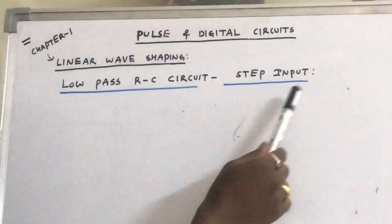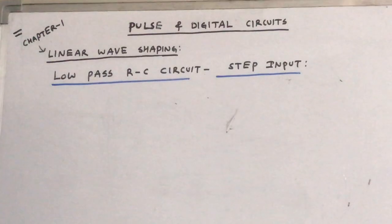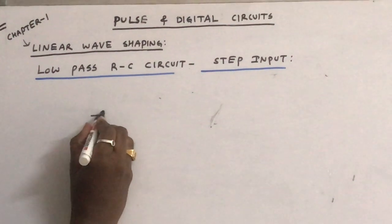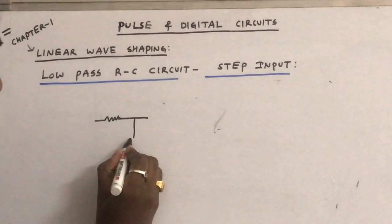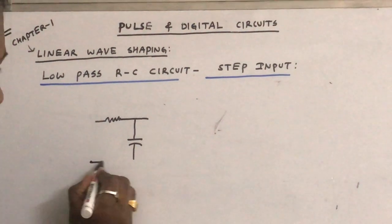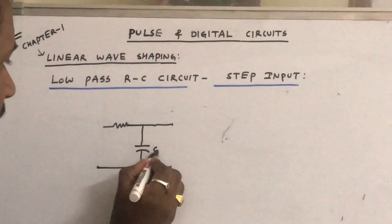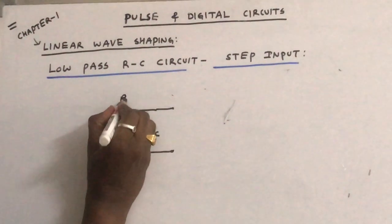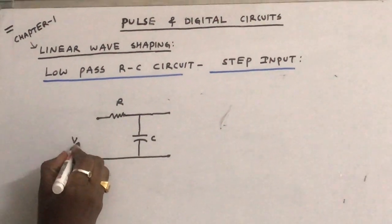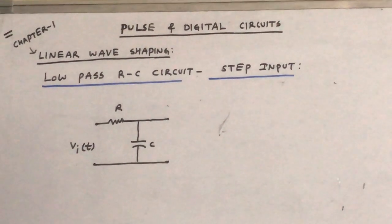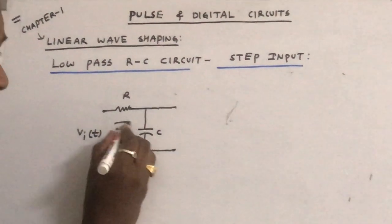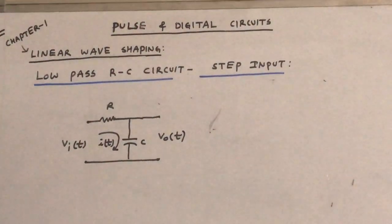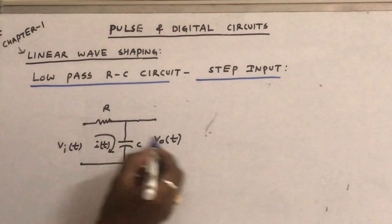We will derive what is the response of the circuit for the step input. As you know, the RC low pass circuit consists of only two elements: resistor and capacitor. Remember that we take the voltage across the capacitor in the low pass circuit. This is Vi(t), the input voltage applied to this circuit. The current flowing through this loop is I(t), and the output voltage across the capacitor is V0(t). This is the circuit with input and output.